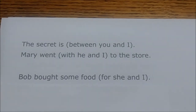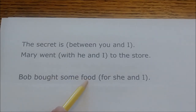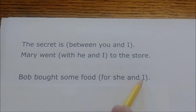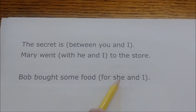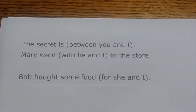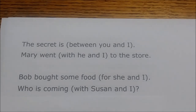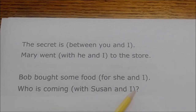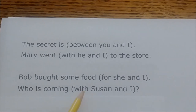'Bob bought some food for she and I' — the subject is Bob, the verb is bought, food is the direct object, and 'for' starts a prepositional phrase. So the pronouns must be objects of the preposition. She and I are subject forms — she must become her, I must become me: 'Bob bought some food for her and me.' 'Who is coming with Susan and I?' — 'with' is a preposition, so I should be me: 'Who is coming with Susan and me?'